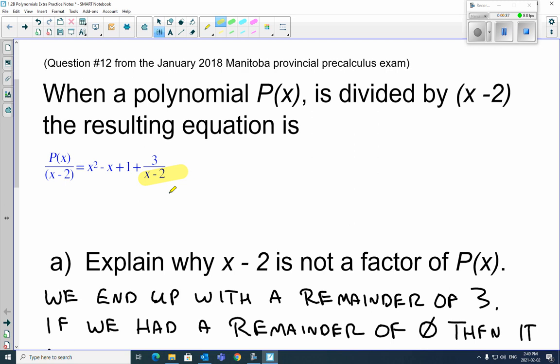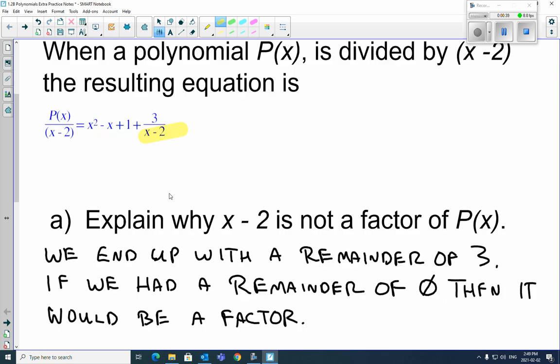Well, what do we end up with? Well, if you look here, did we end up with something on the top? Yeah, we did. We ended up with a remainder of 3. So we know if we had a remainder of 0, then it would have been a factor.